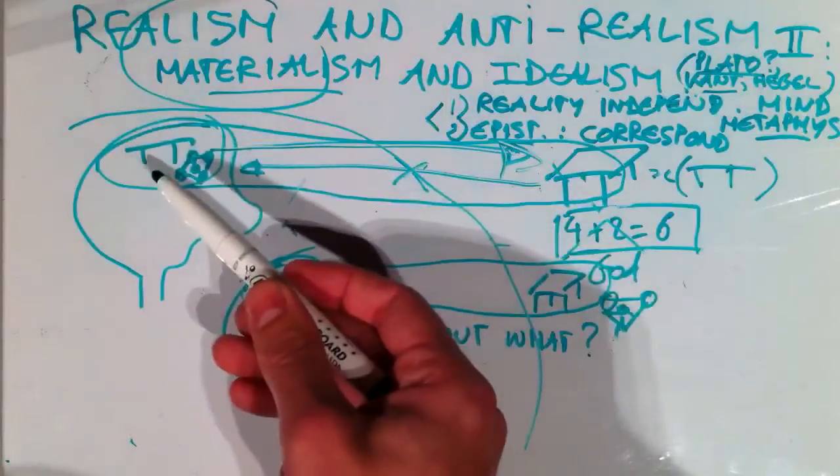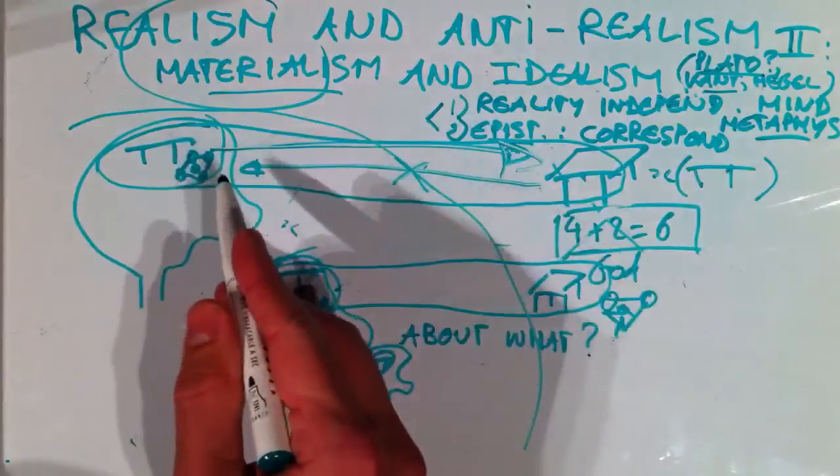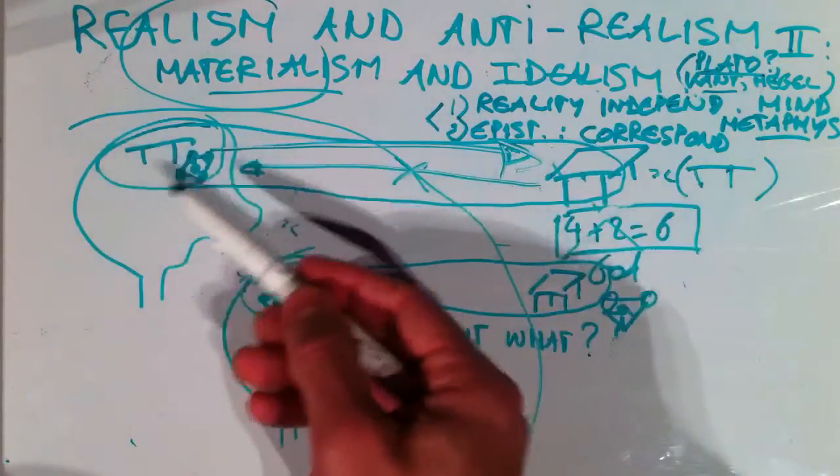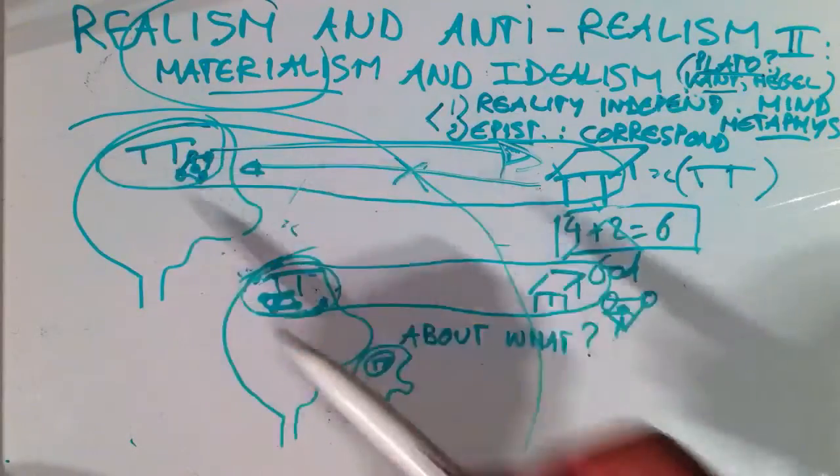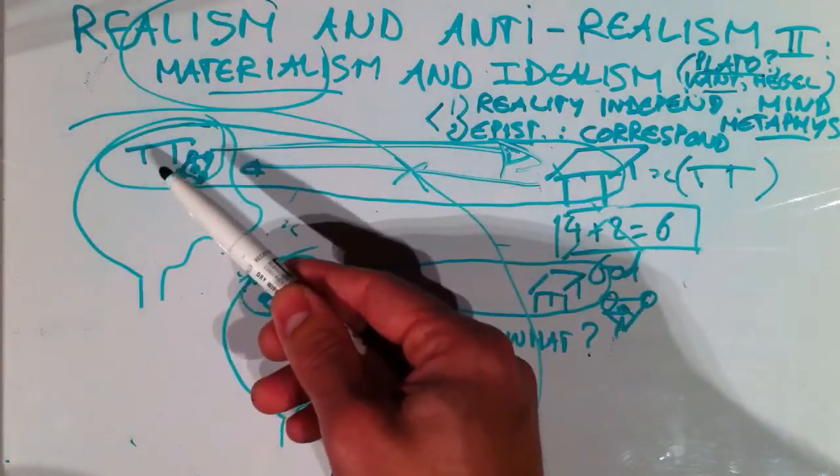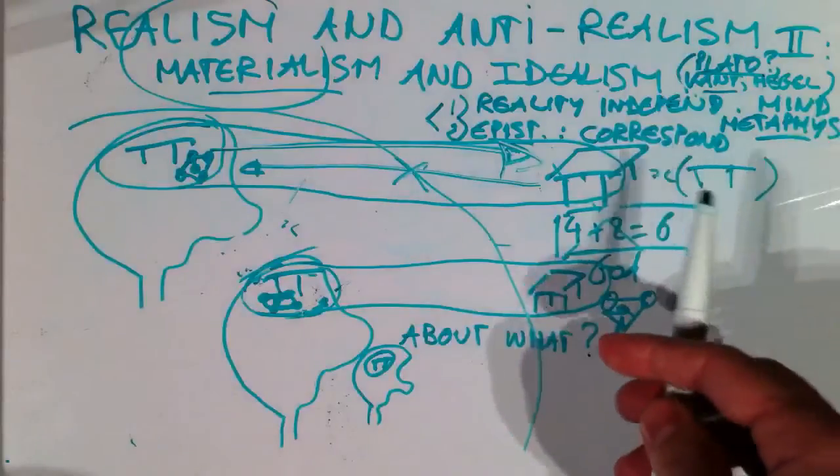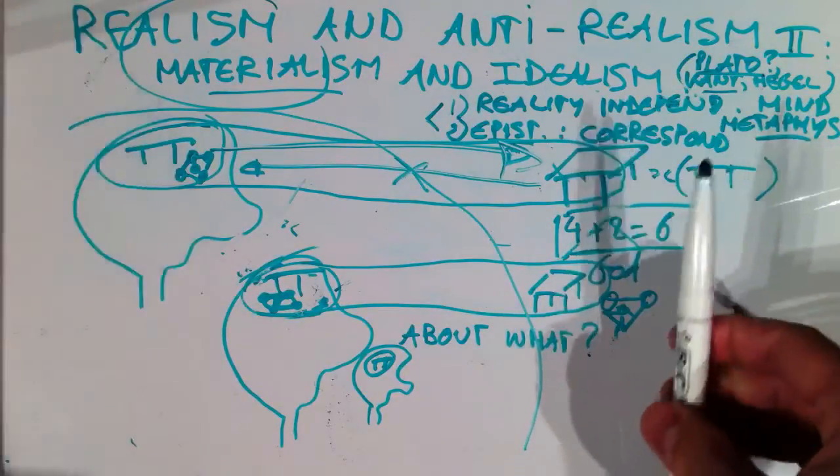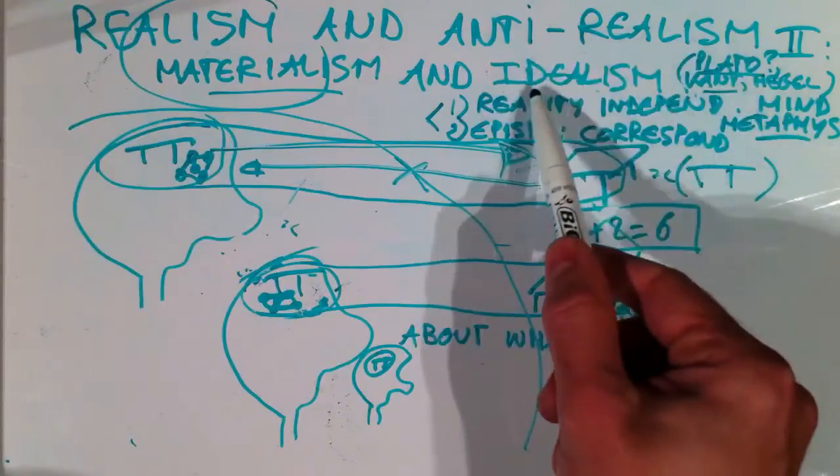And it's not just in the mind. Our mind has access through these ideas, through using our reason, but it's not just in our minds. So in that sense he seems to be a realist. However, you could also make a case in a sense that he's an idealist.